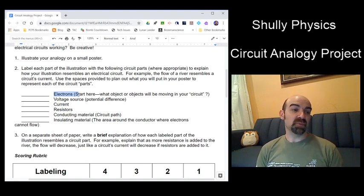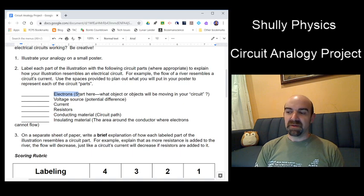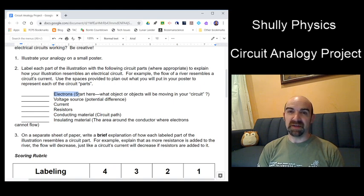But the final piece is also a written portion. It says on a separate sheet of paper. This could be on a Google Doc that you share separately or just get that to me somehow. You need six sentences, one for each of these pieces. Electrons, voltage source, current resistors, conducting material, and insulated material.